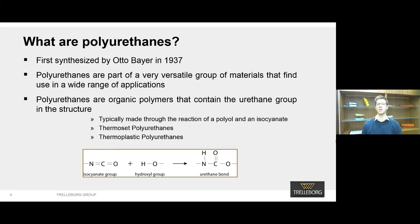Often polyurethanes are referred to as plastics or rubbers, but in fact they're a classification of their own with properties that mimic both plastics and rubbers. Typically they're made from the reaction of different types of isocyanates and different polyols to yield an infinite number of final polymer structures. One single formulation can give you an infinite number of different properties from the final structure.